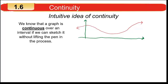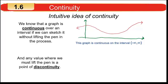I've sketched something with arrows on each end, meaning it continues indefinitely in both directions. There are no breaks in the graph at all, so it's continuous on the interval from minus infinity to infinity — the set of real numbers. Any value where we must lift the pen is a point of discontinuity. If you're graphing and have to lift your pencil from the paper to complete the graph, you've found a point of discontinuity.